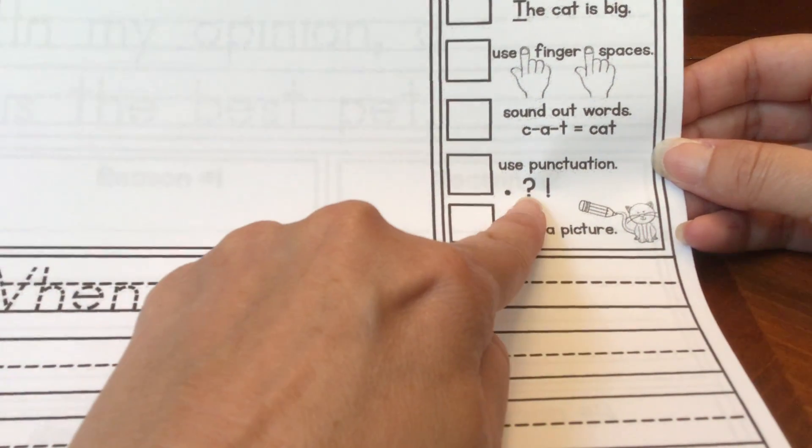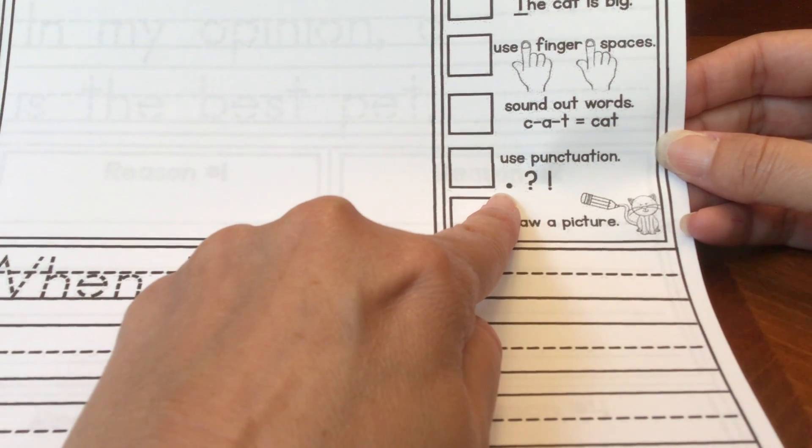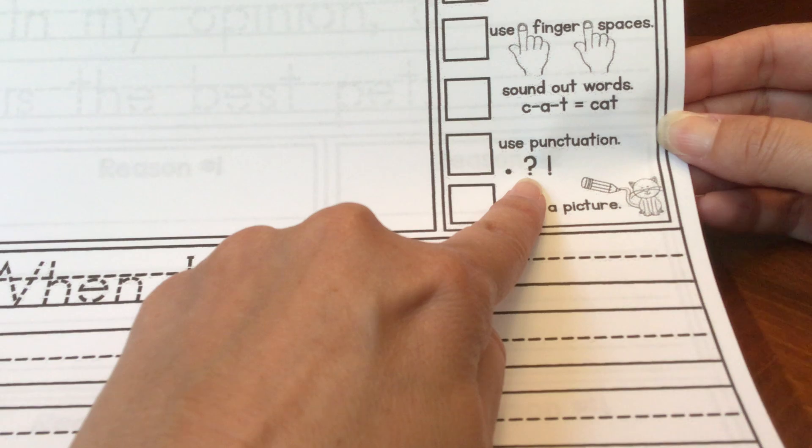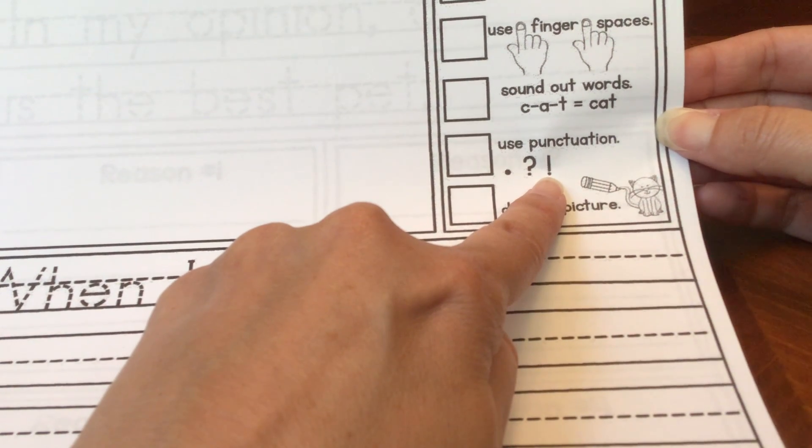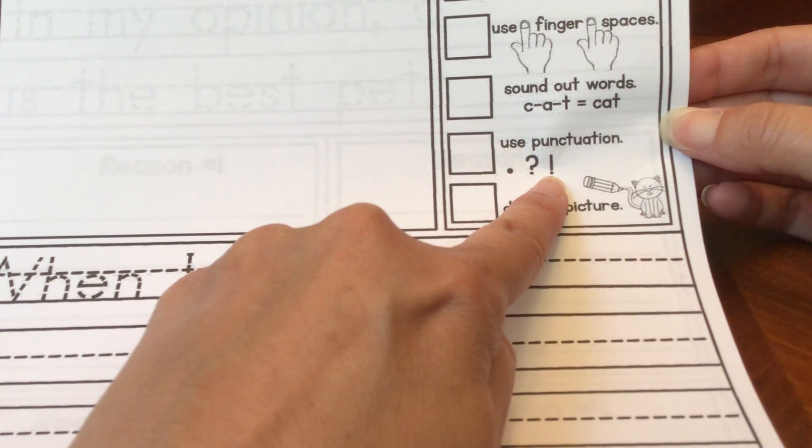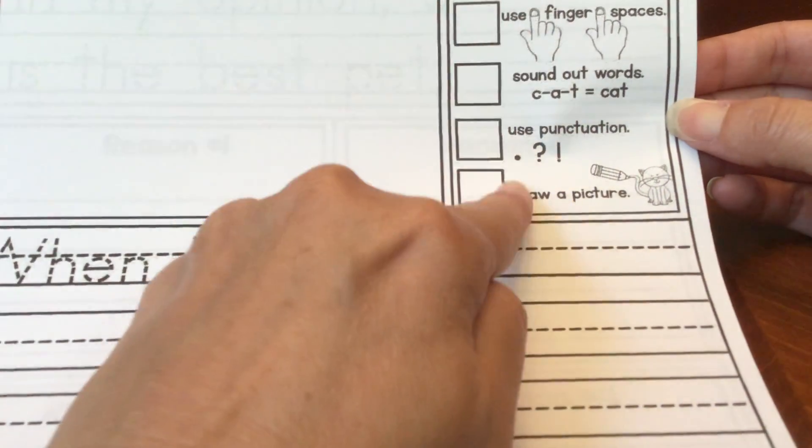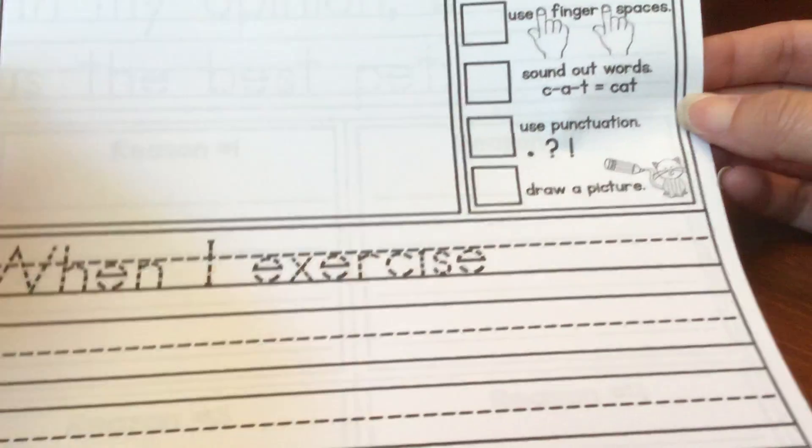I can use punctuation. Make sure you end your sentence with a period, a question mark, or an exclamation mark. Period means you're just telling somebody something. Question mark means you're asking somebody a question. And the exclamation mark means it's excitement. Could be happy or sad or mad or scared. It's showing some kind of excitement. I can draw a picture. So whatever you write, you're going to draw about it.